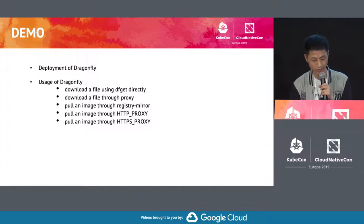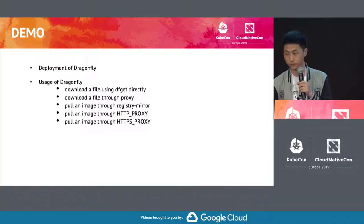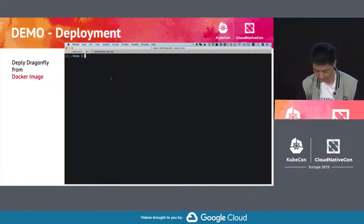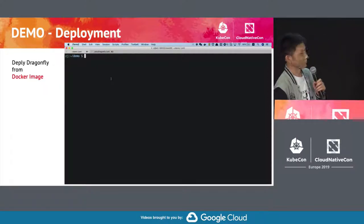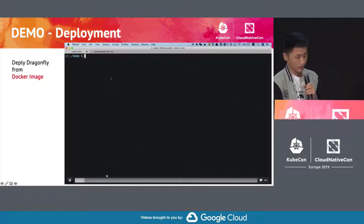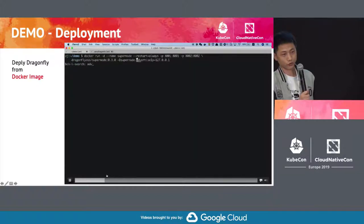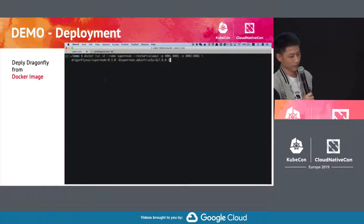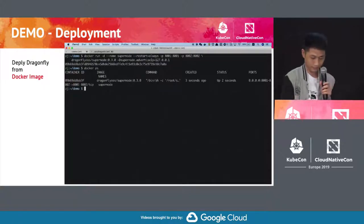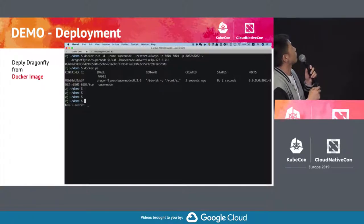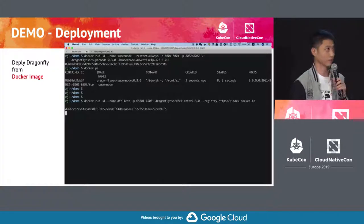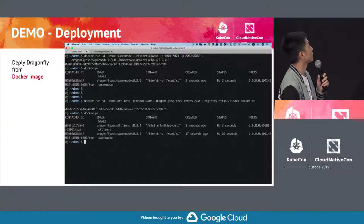Here is a demo. One demo shows the deployment of Dragonfly, and then the usage of Dragonfly. The first demo shows deploying Dragonfly from a Docker image. You just execute two commands to deploy all of Dragonfly. The first command is to deploy the super node. And the second command is to deploy the dfclient, which contains dfget and DFDemon. And that's all.